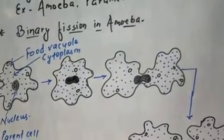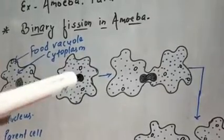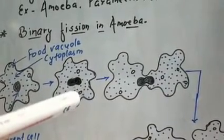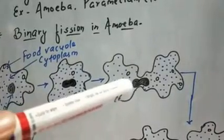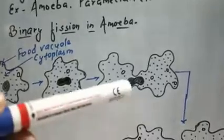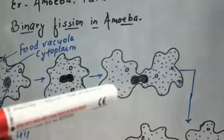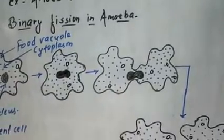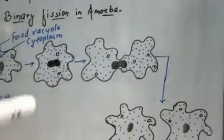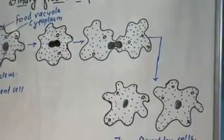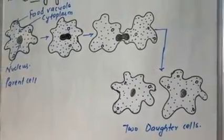Students, यहाँ पर देखेंगे: first step में क्या होता है? जो parent cell है उनका nucleus lengthen होना शुरू हो जाता है। इसके बाद nucleus divide होना शुरू हो जाता है, और nucleus जब divide होता है तो cytoplasm भी divide होना शुरू हो जाता है साथ-साथ। जैसे nucleus अलग होगा, cytoplasm भी दो parts में divide हो जाते हैं, और इस तरह से एक Amoeba से दो new daughter cells का formation होता है।